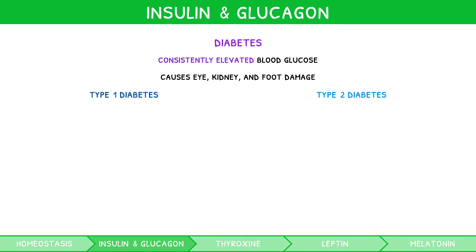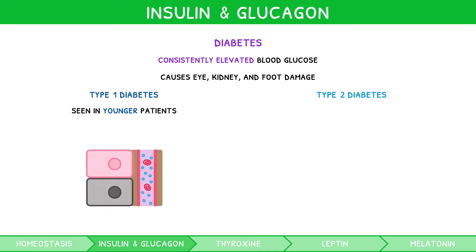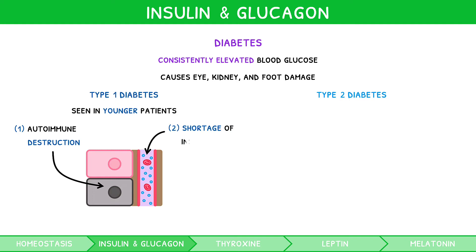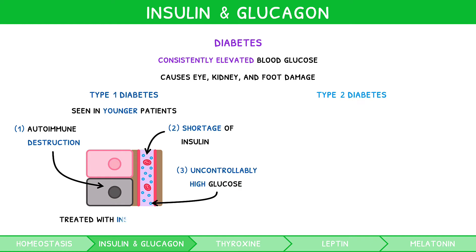Type 1 diabetes is seen mostly in younger patients. In this disease, there is autoimmune destruction of the beta cells, resulting in a shortage of insulin. As a result, blood glucose levels rise to uncontrollably high levels. The treatment includes injections of insulin.